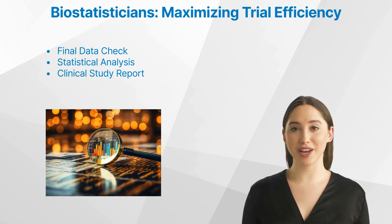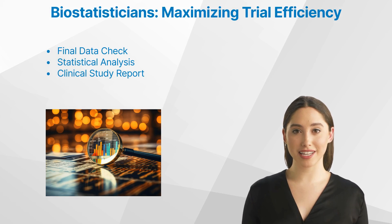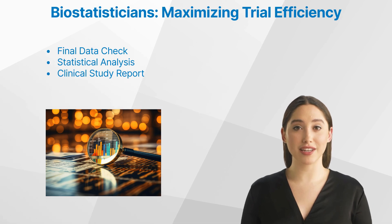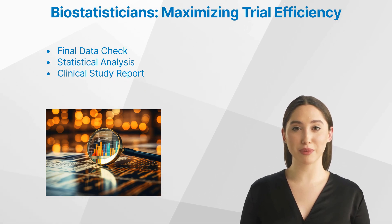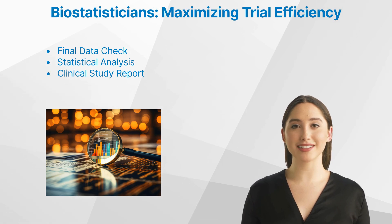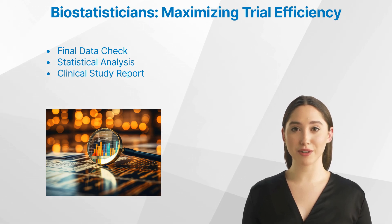Let us now have a look at the trial closeout with data validation and analysis. Final data check. At the closeout phase, biostatisticians perform a final check of the trial data to ensure its integrity and completeness. They verify data accuracy, assess missing data patterns, and address any data anomalies or inconsistencies. This meticulous data validation process is crucial to ensure the reliability of the trial results and maintain data integrity.